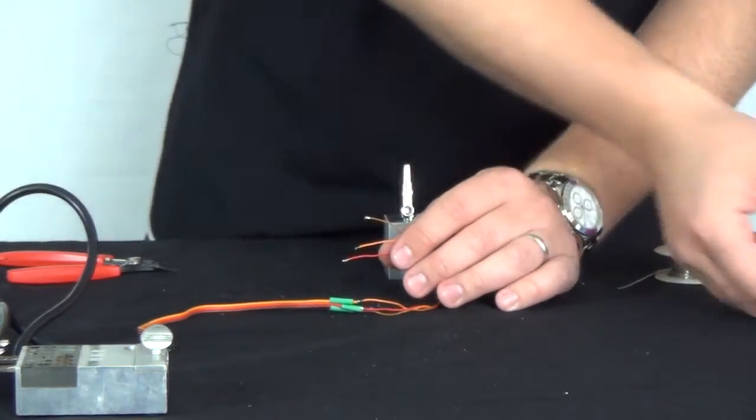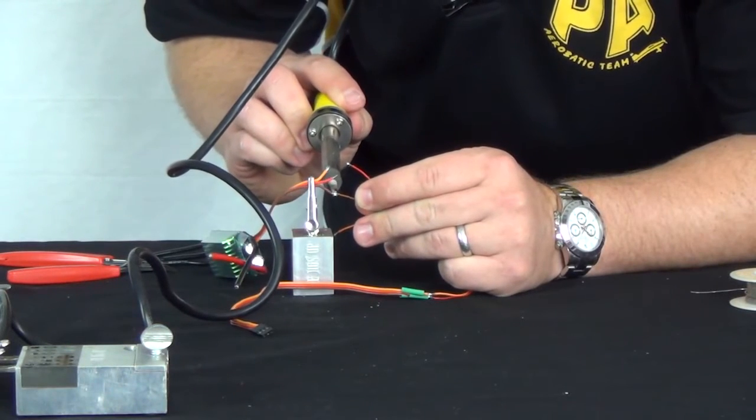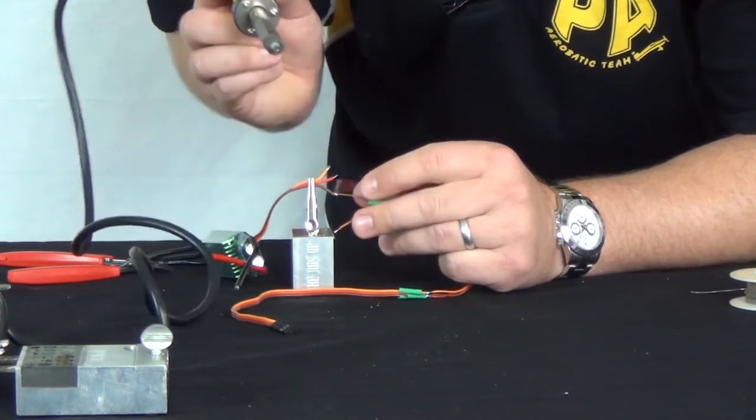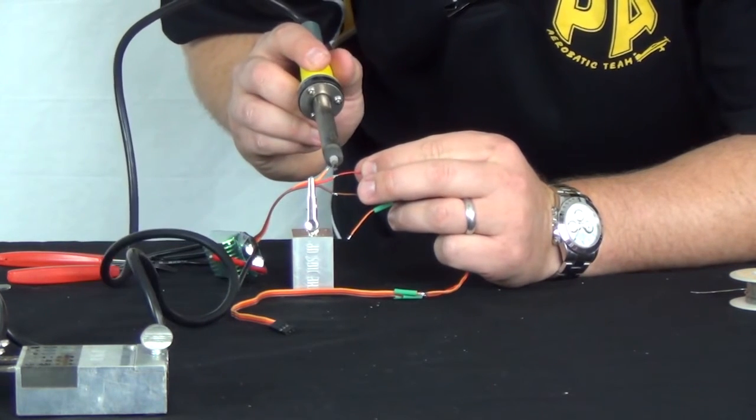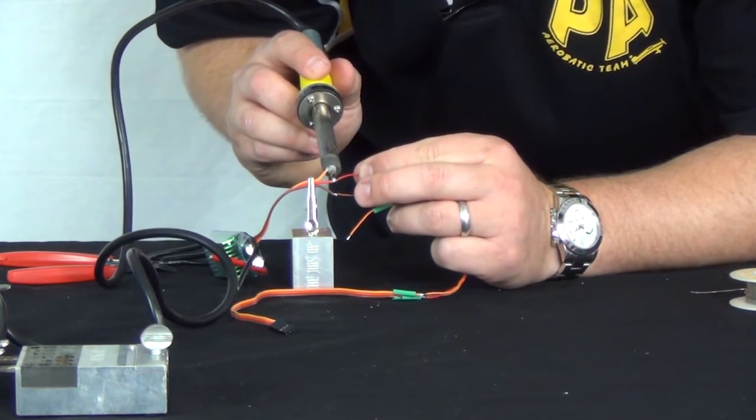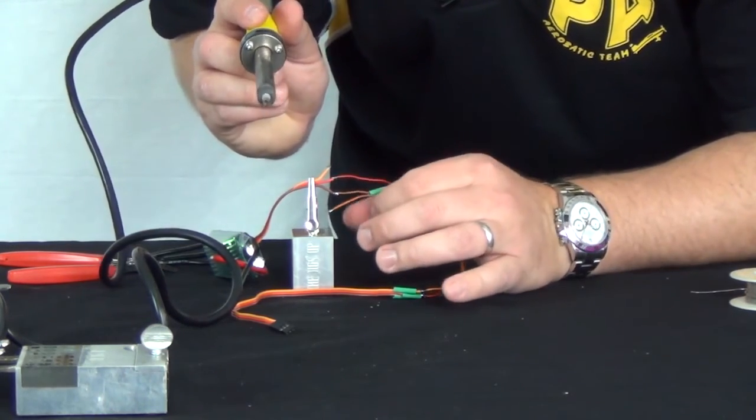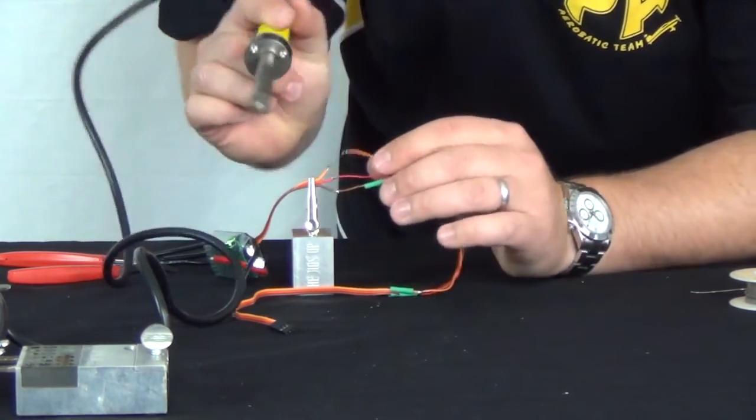Once you have both sides tinned, cut and slide your heat shrink tubing into place. Clamp one side into the holder and prepare a clean tip with a fresh puddle of solder. Now bring the wires together again and touch the tip to the pair. The solder should flow out immediately and envelop the pair. Molten solder will appear bright and shiny like mercury.